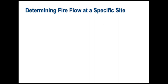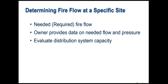The property owner typically provides the needed fire flow and the desired pressure, and then you evaluate the distribution system to determine if there's enough capacity. You can run a hydrant flow test physically or use the model loaded with the needed fire flow to see how the system will behave. Calculating the needed fire flow itself is done outside the model using formulas based on building material, size, occupancy, and proximity to other buildings.